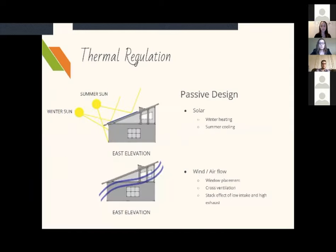Here we have our thermal regulation. Next is the thermal regulation regarding passive design. The first diagram shows the angles of the summer and the winter sun that are specific to the uncommon ground location from the east elevation.